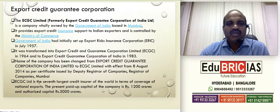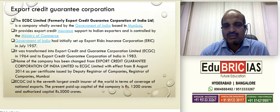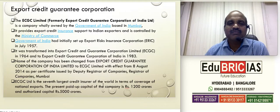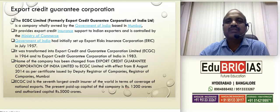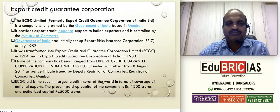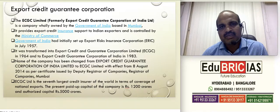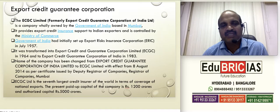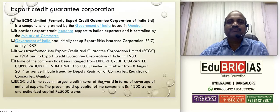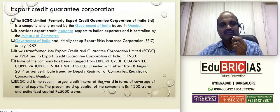The head office is in Mumbai. ECGC is the seventh largest credit insurer in the world. The presently paid-up capital is around 1,200 crores and authorized capital is 5,000 crores, whose main objective is basically to promote exports. In today's newspaper, you can see the government is very keen to ensure that exports have to be facilitated at any cost, and for that reason this money has been allocated.